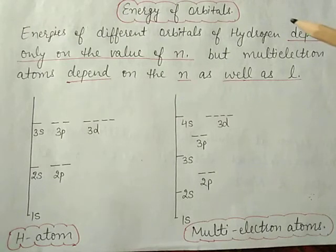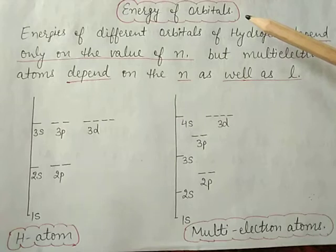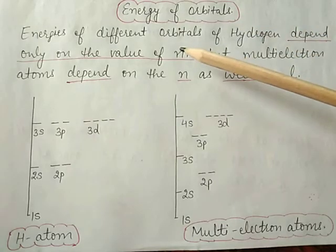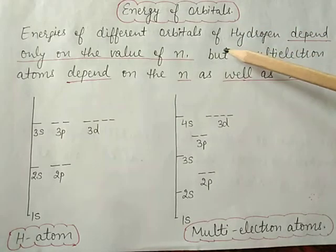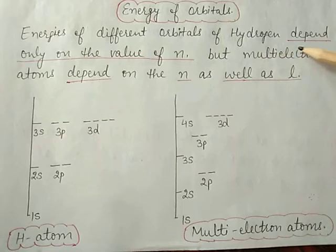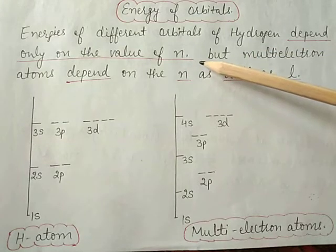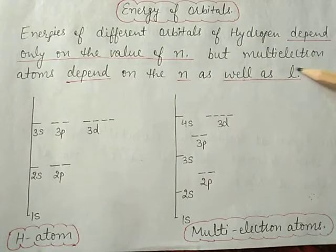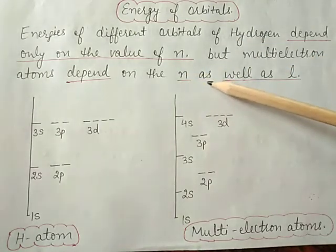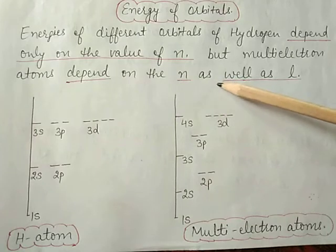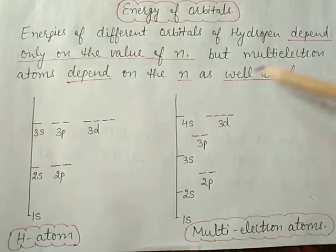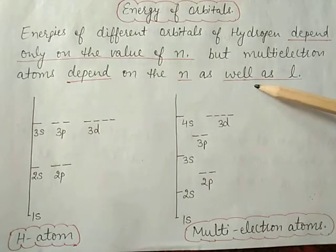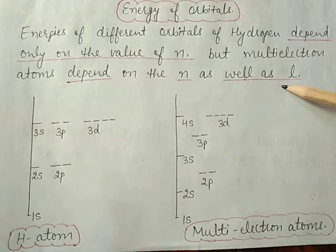Good morning students. Today's topic is energy of orbitals. Energy of different orbitals of hydrogen depends only on the value of n, the principal quantum number. But for multi-electron atoms, it depends on n as well as l, meaning both the principal quantum number and the azimuthal quantum number.